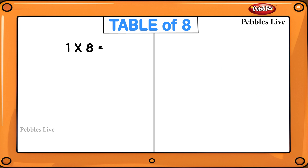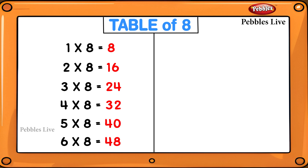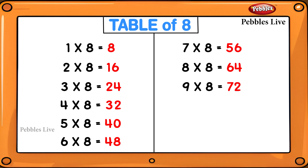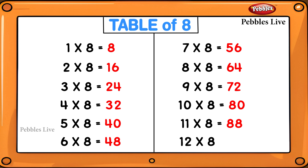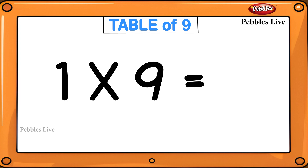1 eight is 8, 2 eights are 16, 3 eights are 24, 4 eights are 32, 5 eights are 40, 6 eights are 48, 7 eights are 56, 8 eights are 64, 9 eights are 72, 10 eights are 80, 11 eights are 88, 12 eights are 96. Table of 9.